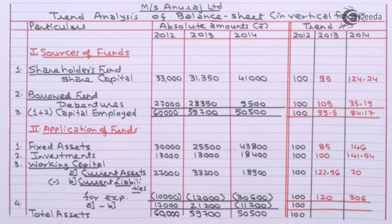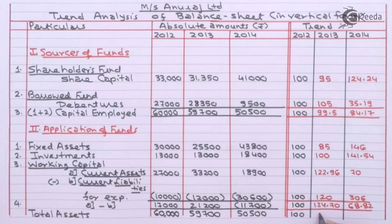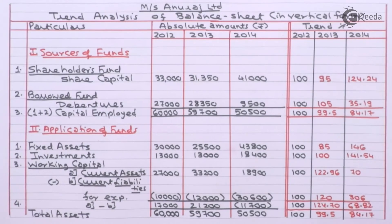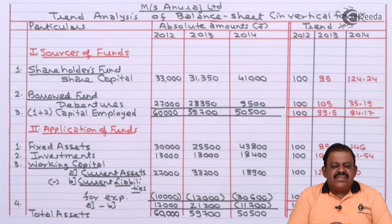For working capital: 2013 is 124.70 percent and 2014 is 68.82 percent. For total assets, it is the same as capital employed — 99.5 for 2013 and 84.17 for 2014. Thus in this question we have understood how to prepare a vertical trend balance sheet based on a horizontal or normal balance sheet given in the question. Thanks for watching — stay tuned with Ikeda and subscribe to our channel.